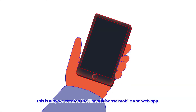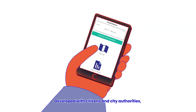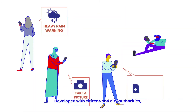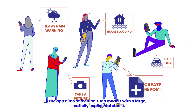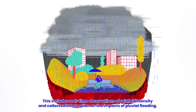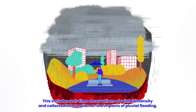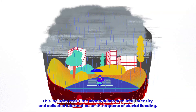This is why we created the Flood CitySense mobile and web app. Developed with citizens and city authorities, the app aims at feeding such models with a large, spatially explicit database. This includes real-time observations of rainfall intensity and collected information on the impacts of pluvial flooding.